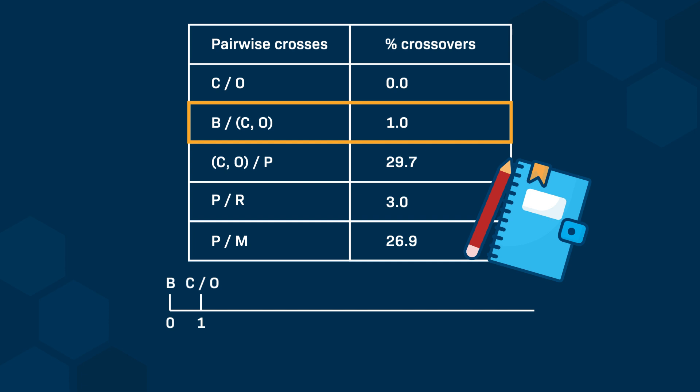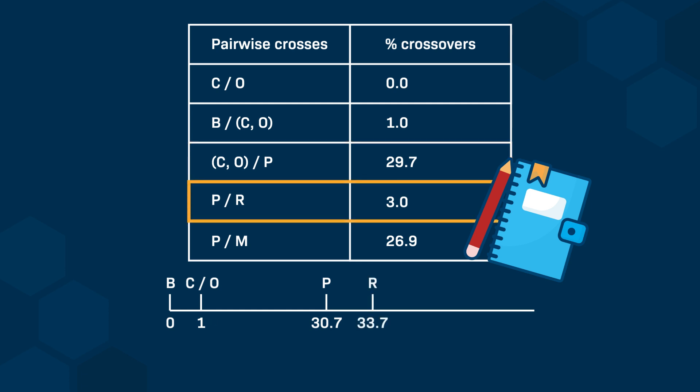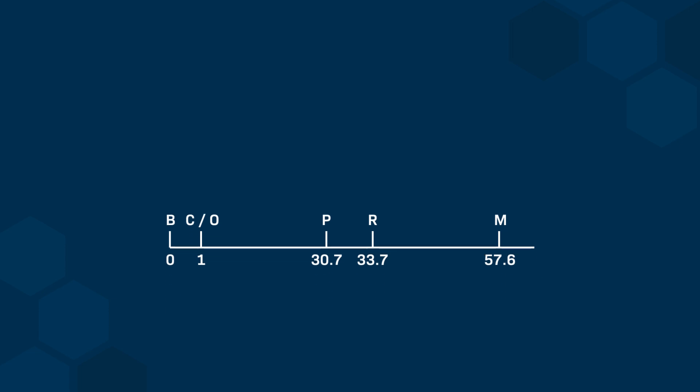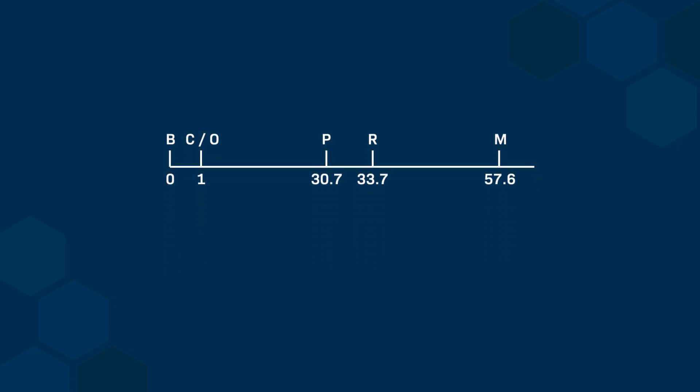When he looked at recombination between the B allele and the C and O alleles, the percentage of recombination was 1%. For crosses between the C, O, and P alleles, the percentage of recombination was 29.7%. The pairwise crosses between the P and R alleles resulted in a recombination frequency of 3%, while the pairwise crosses between the P and M alleles gave a recombination frequency of 26.9%. Based on these recombination percentages, Sturtevant established the first genetic map showing the position of these six X-linked genes.